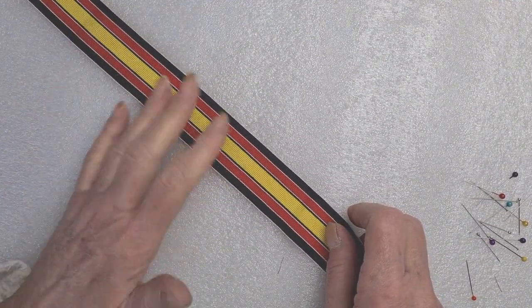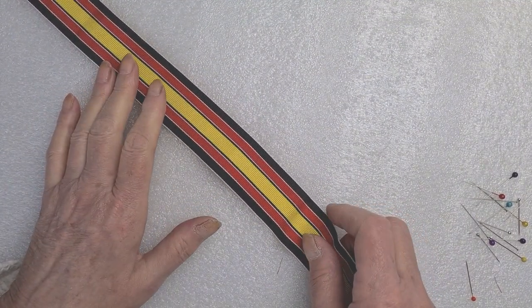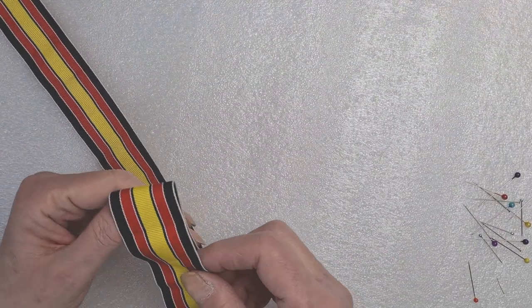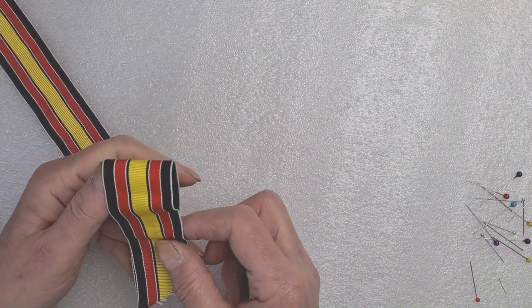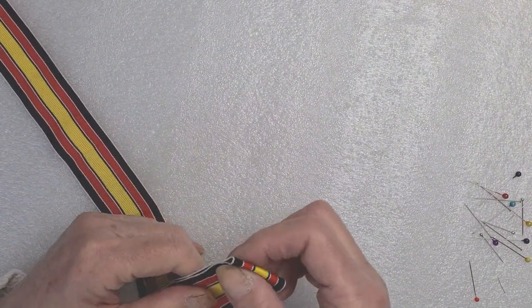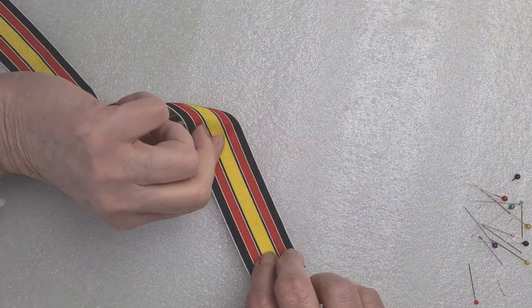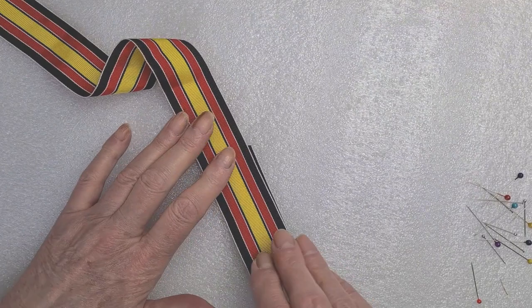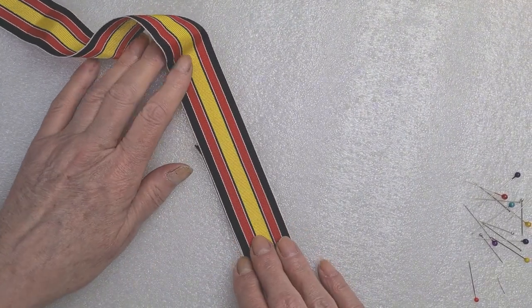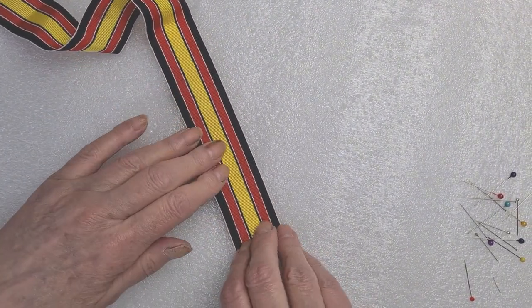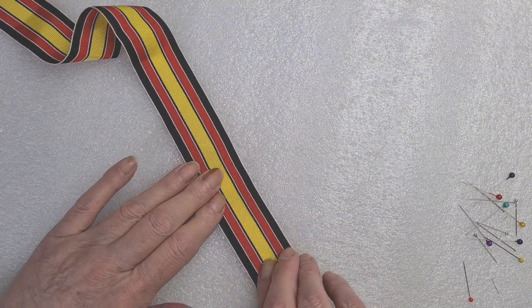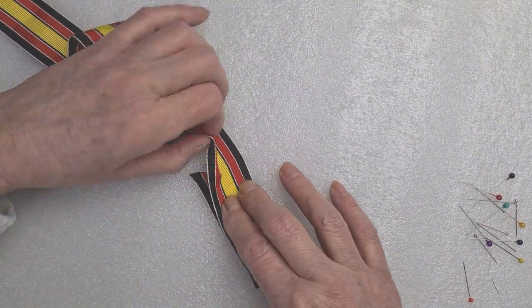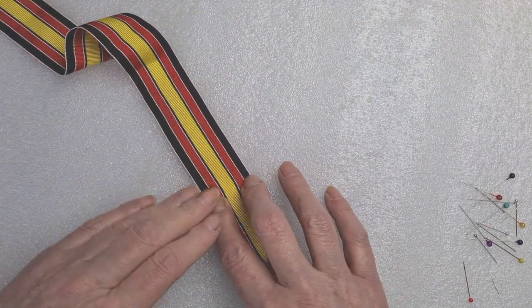What we're going to do is first decide how long we want our end to be. I'm going to go for about this, so I've folded it over and placed it down. Actually I'll do a bit smaller because it might be too big otherwise. I've folded it over, it's probably about three inches folded over.